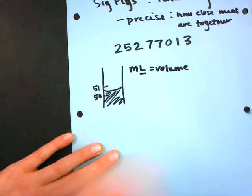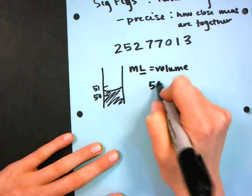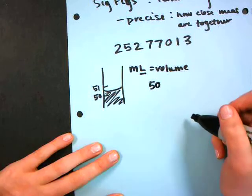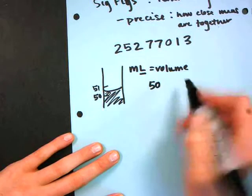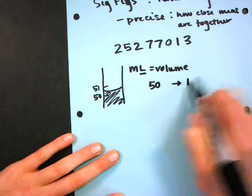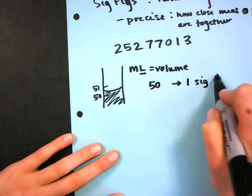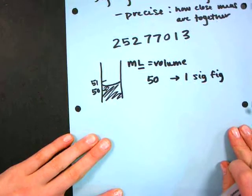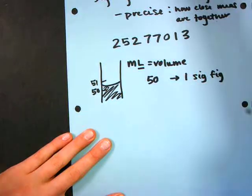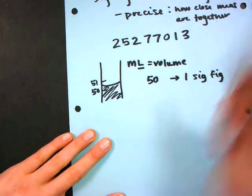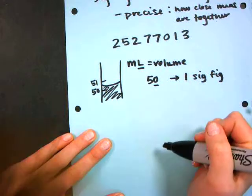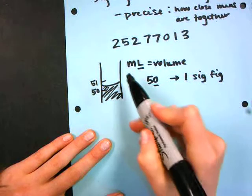So if I look at this graduated cylinder quickly I'm just going to say 50, and so from this measurement I'm going to have one sig fig. So I have one significant figure and I have that because this zero at the end is a placeholder, it's just holding the place for me to get to 50.